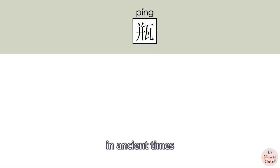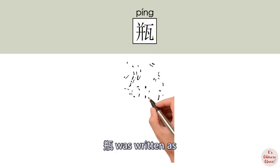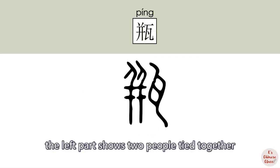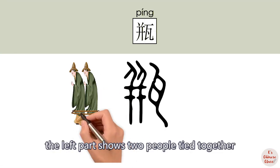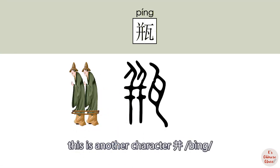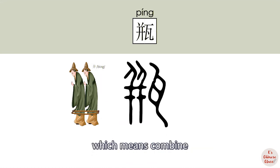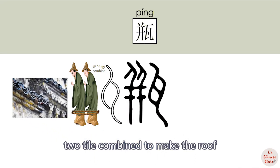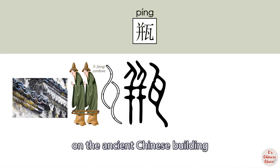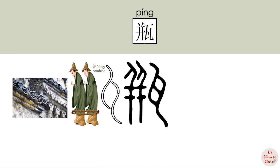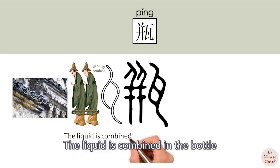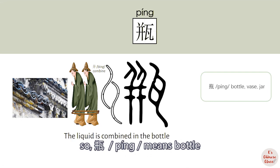In ancient times, 瓶 was written differently. The left part shows two people tied together. This is another character, 并, which means combine. The left part shows two tiles combined to make the roof on an ancient Chinese building. The liquid is combined in the bottle, so 瓶 means bottle.